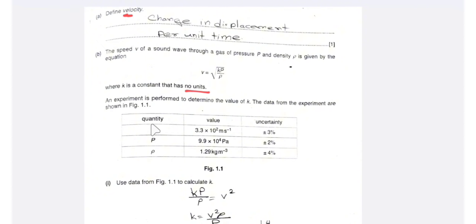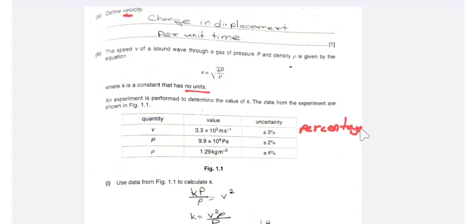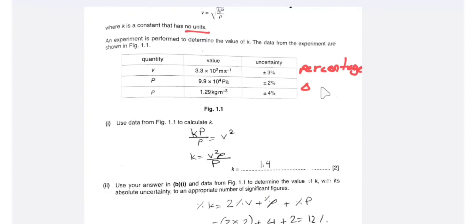We have been given the quantity, their values, and the uncertainty. You have to remember that the uncertainty given is percentage uncertainty — we have been given the value of percentage uncertainty and not the value of absolute uncertainty.